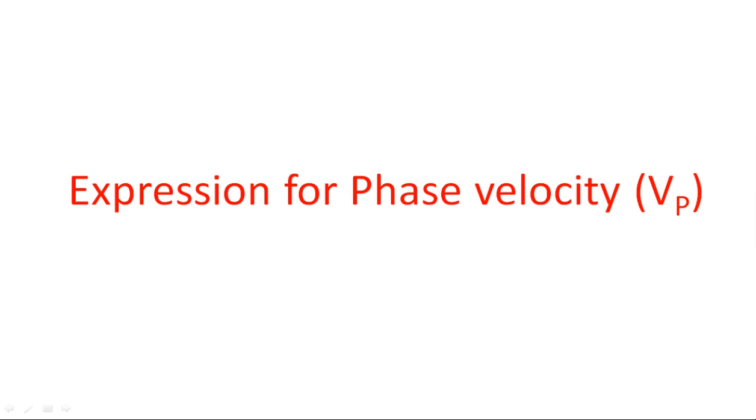Hi everyone. In this video I am going to derive the expressions for phase velocity. In the previous video I gave you the definition of phase velocity and group velocity. Now in this video we are going to see what is the expression for phase velocity in terms of cutoff wavelength and free space wavelength. The phase velocity is the velocity with which the wave travels or propagates in the waveguide. If you take a rectangular waveguide, this is the wave that travels in it, and we want the velocity with which the wave travels from one end to the other.